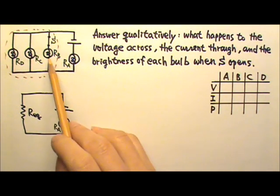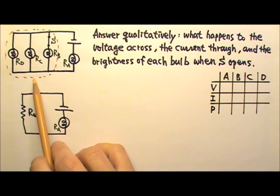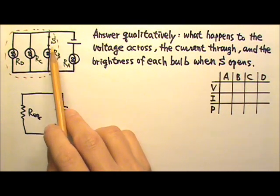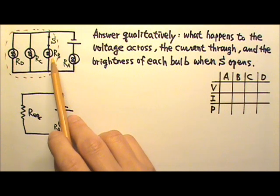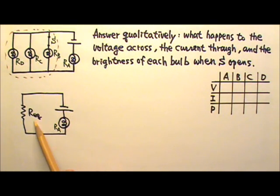We know that the more resistors we have in parallel, the smaller the equivalent resistance. When the switch opens, the opposite happens. We get one fewer resistor in parallel. That means the equivalent resistance should increase.